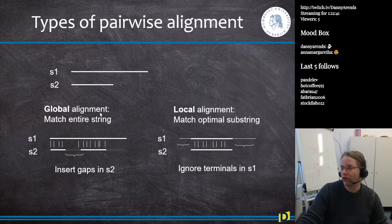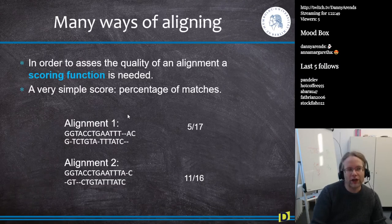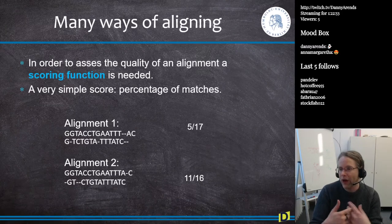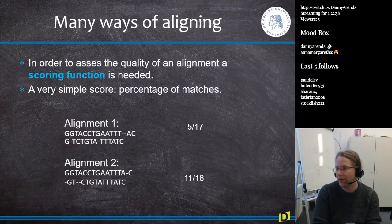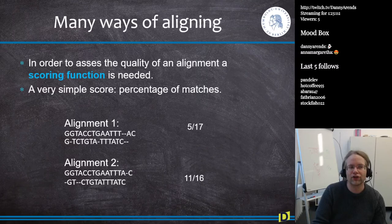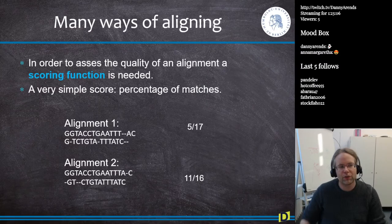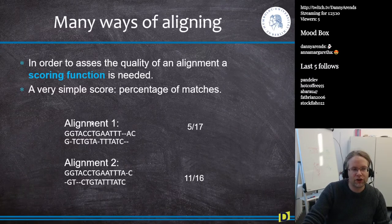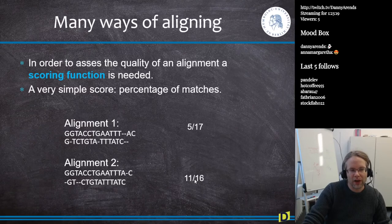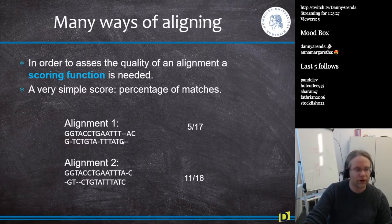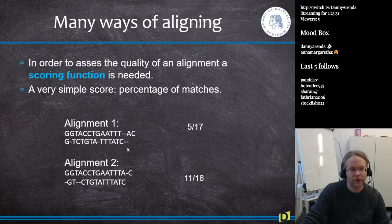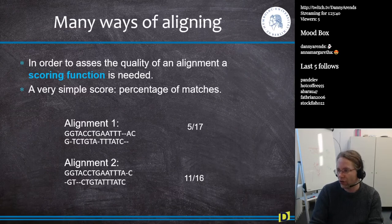There are many different ways of aligning, so we need a scoring function to say which alignment is good or bad. The very simplest score is just the percentage of matches. For example, alignment one might match 5 out of 17 positions, while alignment two matches 11 out of 16 positions. This lets us determine which alignment is better.